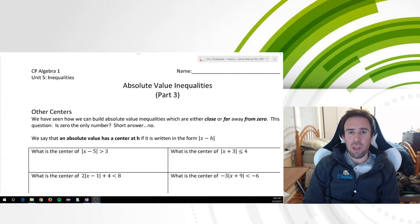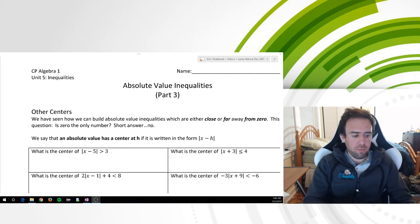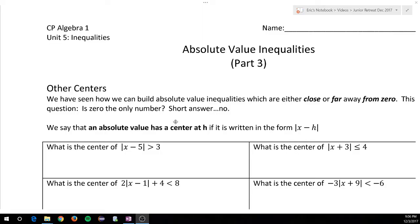Again, I'm going to have a combination of typing things and writing things with the pen tool. So if I put down anything on the screen, please write it down as well, and we'll go through the notes together. Here we go. So, does the absolute value always have to be centered at 0? The short answer is no. And you can tell where the center is by looking at what is inside.